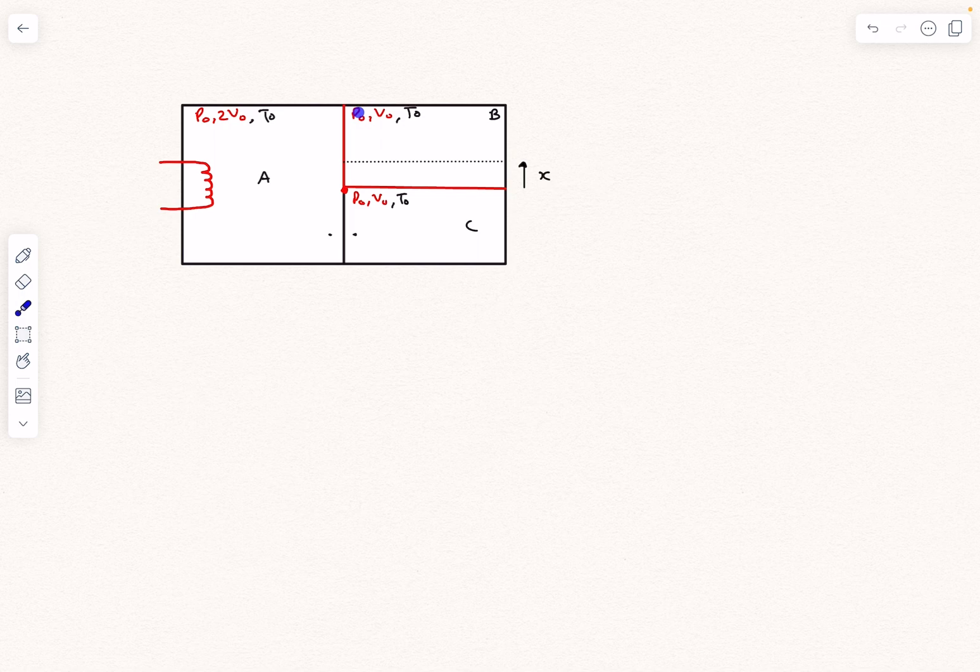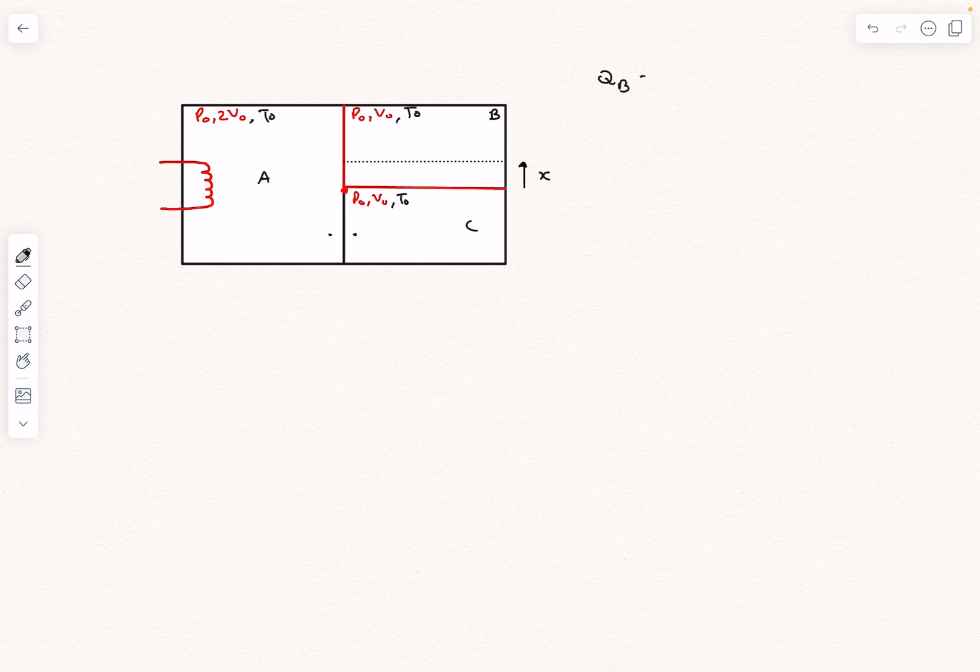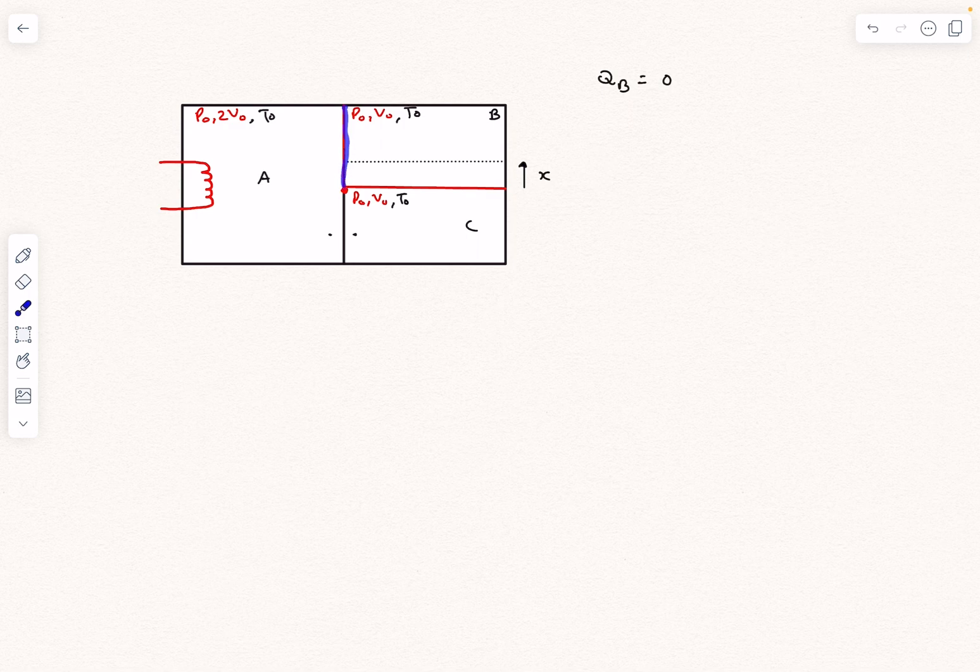Throughout the process, the net heat transfer into section B, QB, is actually zero because the container itself is thermally insulated, this wall is non-conducting, and this piston is also non-conducting.